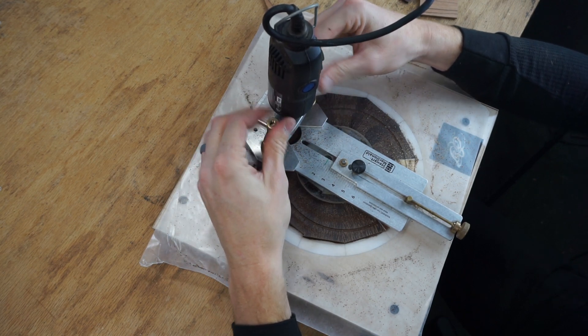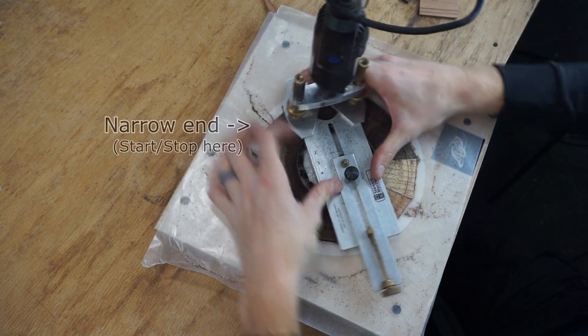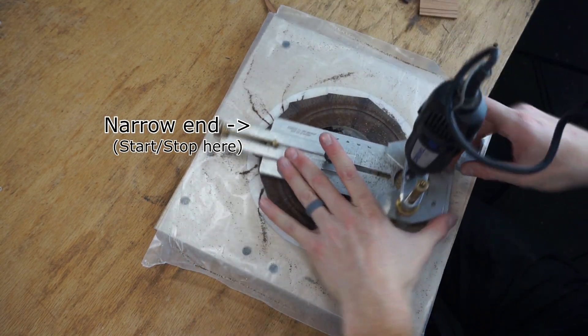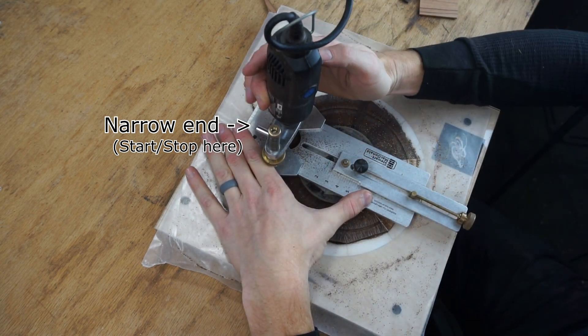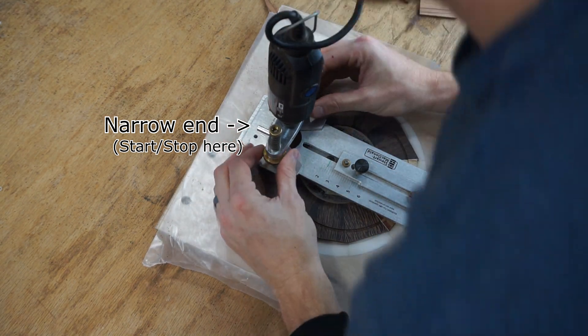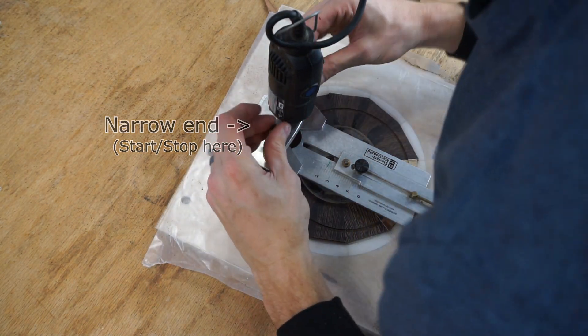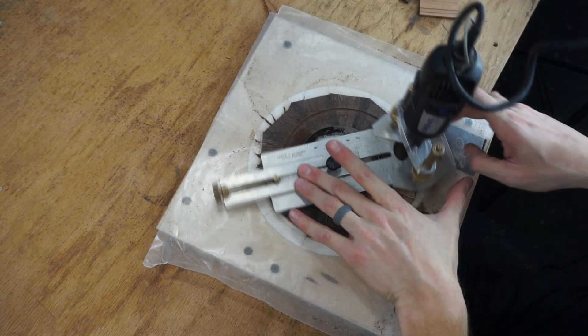Every pass I make with the Dremel begins and ends at the narrow end of the rosette, simply because that part of the rosette will be covered by the fretboard tongue. So any issues that potentially occur from starting and stopping the bit will be covered by the fretboard anyway in the end. I continue making passes in this manner, adjusting the bit's depth by a 32nd of an inch or less every time.